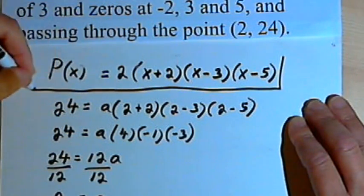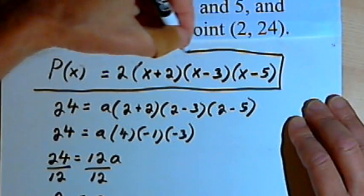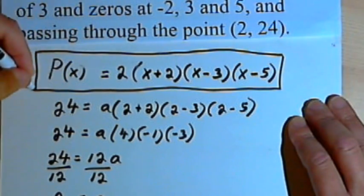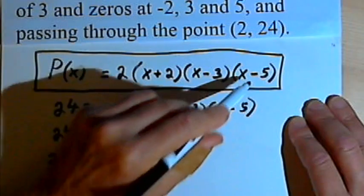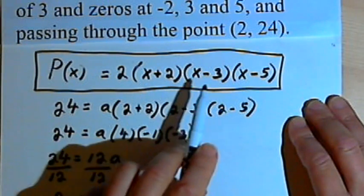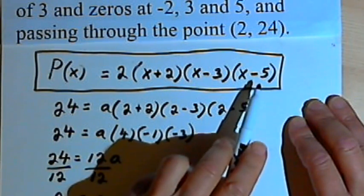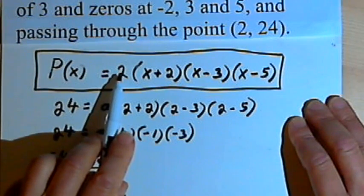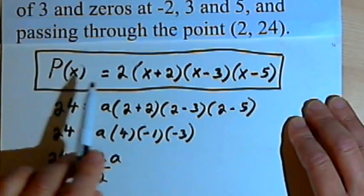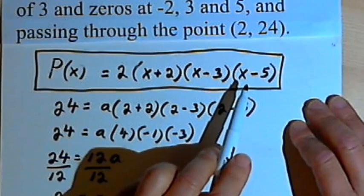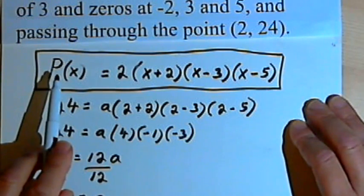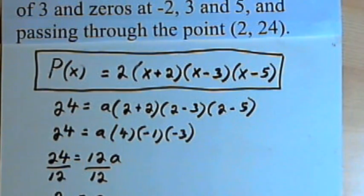If you want to, or if your teacher wants you to, you could multiply these three factors, the (x plus 2) times (x minus 3) times (x minus 5), and times that constant 2, and you would have the function in a more standard form. But this answer is also correct. Let's try one more.